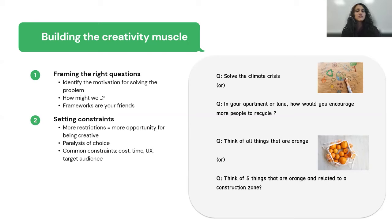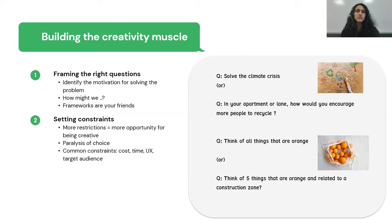Also consider thinking about solutions by varying the restrictions along different dimensions. For example, how would we design this if we had $1,000 of budget? If we had $10,000? If we had $1 million? Varying it along those lines will help you ideate and brainstorm better.